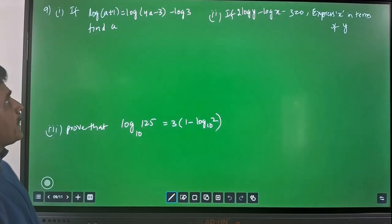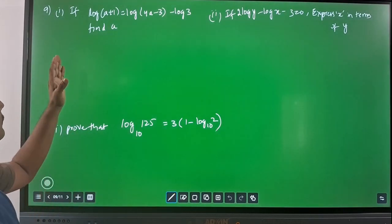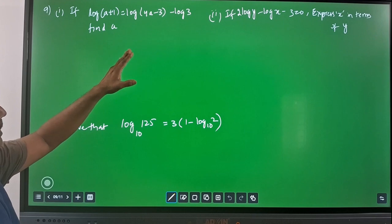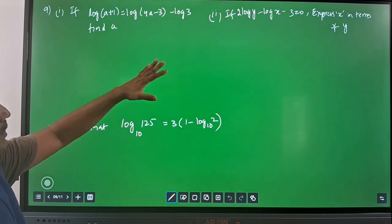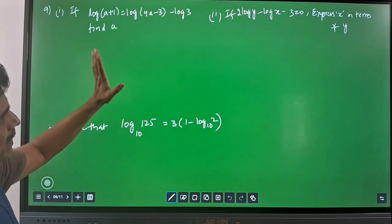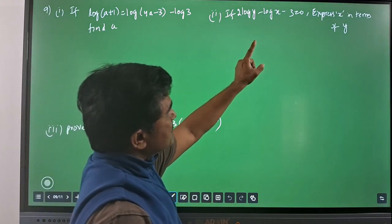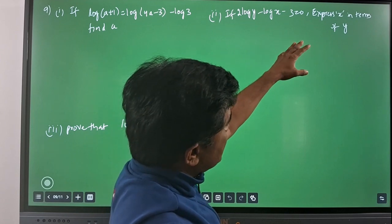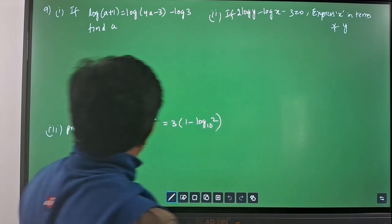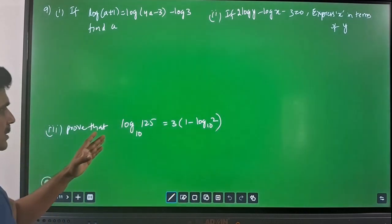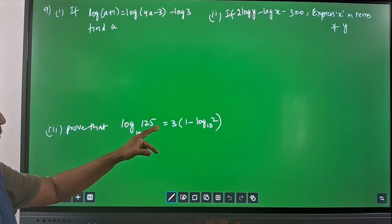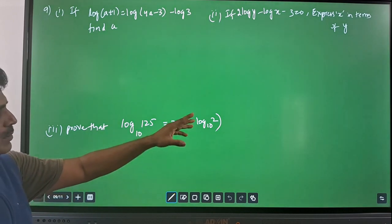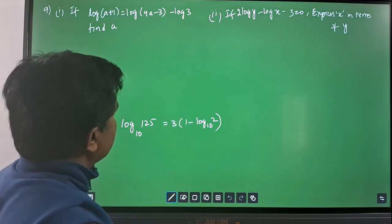The next question has three parts. First: if log(a+1) is equal to log(4a−3) minus log(3), find a. Second: if 2log(y) minus log(x) minus 3 is equal to 0, express x in terms of y. Third: prove that log(125/10) is equal to 3 into 1 minus log 2, base 10.